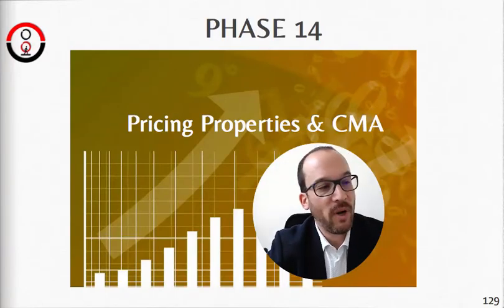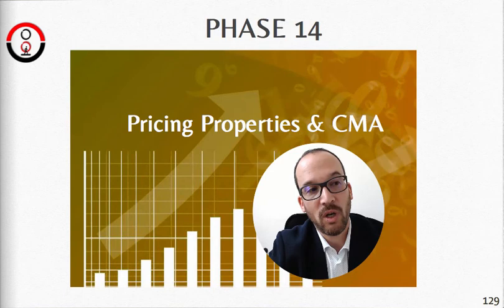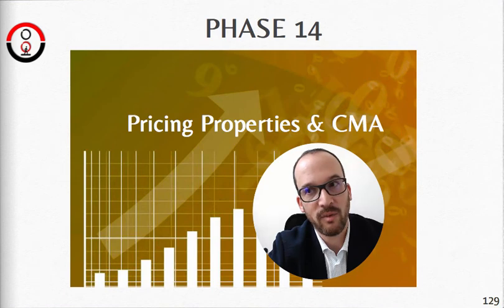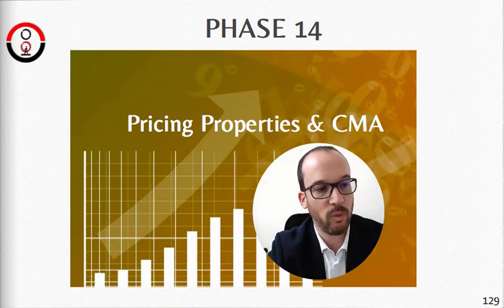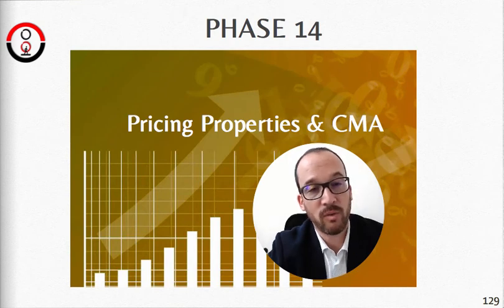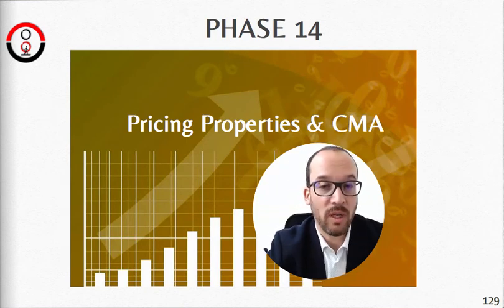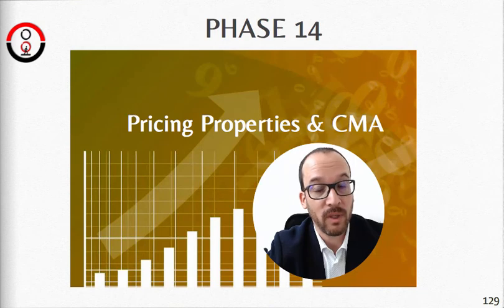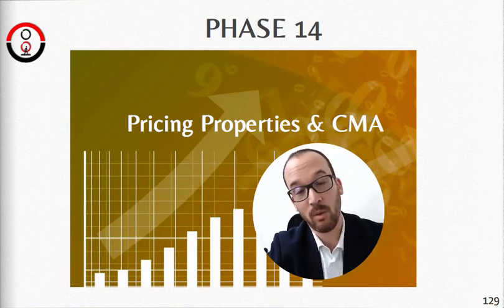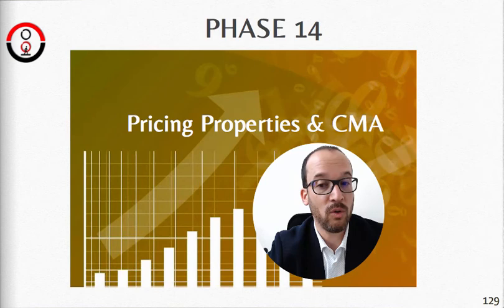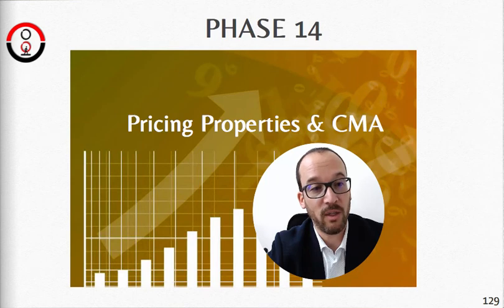Step 14: pricing properties and CMA. At this stage, understand something important. Many agents out there will take a listing for whatever price — if the seller says list at $500,000 even if the house is worth $379,000, some agents will still take that listing. I never understood that, because every single expired listing on your inventory is going to work against you. You can use having no expired listings to win against another agent in a competition.